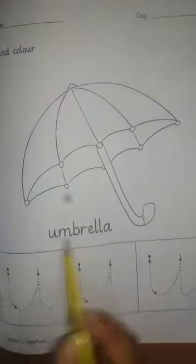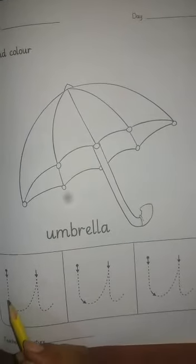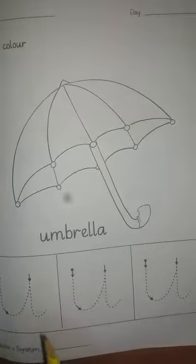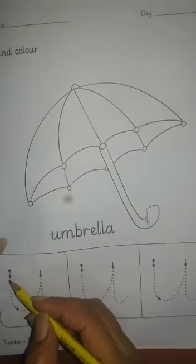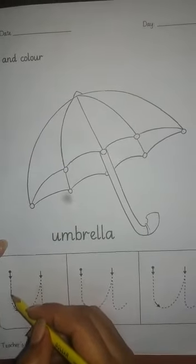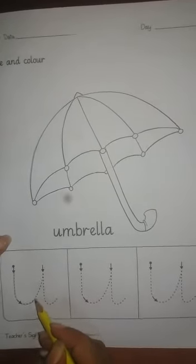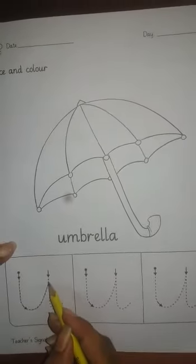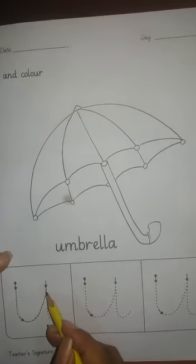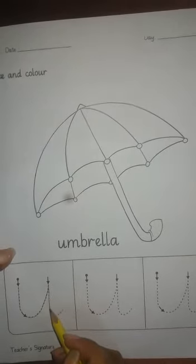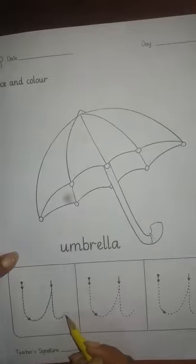U for umbrella, U for umbrella, okay? So students, here we learn how to write a letter U. So let's start, okay? Start from the dot and just trace it, okay? Letter U, okay, U.